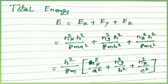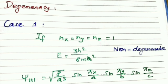Now we discuss degeneracy — this means states having the same energy. Consider case number one where nₓ, nᵧ, n_z values are (1, 1, 1).